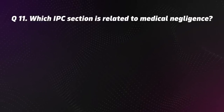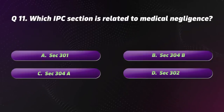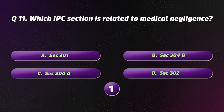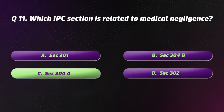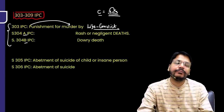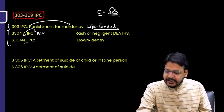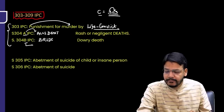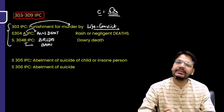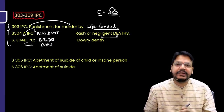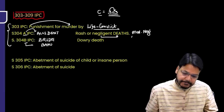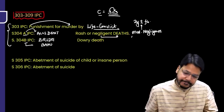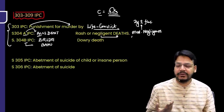Question 11. Which IPC section is related to medical negligence? The correct option is C — Section 304A. Memory trick: A for Accident — by any rash and negligent act causing death. B (304B) is for bride or bahu (dowry death). Medical negligence also comes under IPC 304A. The punishment is 2 years. The simple trick: A for accident — by rash and negligent act causing death.